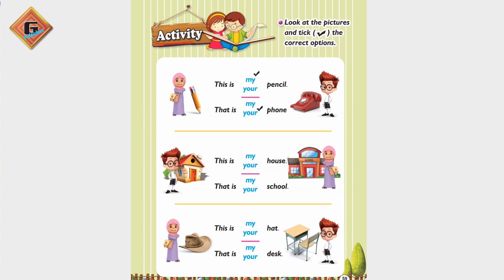OK students, now we are on page 59 and this is our activity page. 'Look at the pictures and tick the correct options.' We have some pictures, each with a sentence and two options — my or your — and you have to tick the correct answer. The first one is already solved as an example: 'This is my pencil.' And 'That is your phone.'